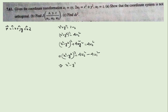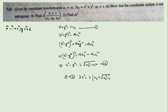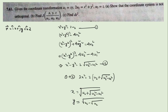Therefore x² - y² = 2√(u2² - u1²). From equations 1 and 2, adding them: 2x² = 2(u2 + √(u2² - u1²)), so x = √(u2 + √(u2² - u1²)). Similarly, subtracting gives y = √(u2 - √(u2² - u1²)), and z remains z.